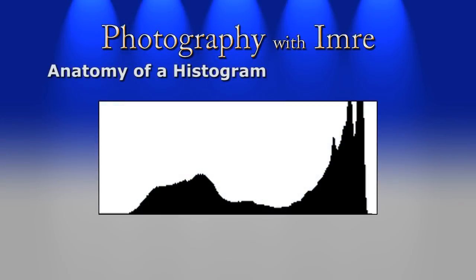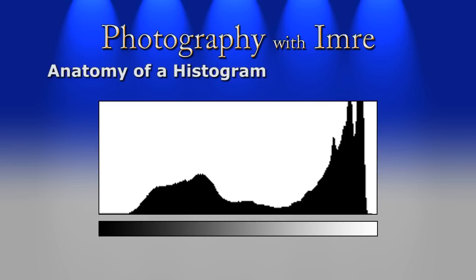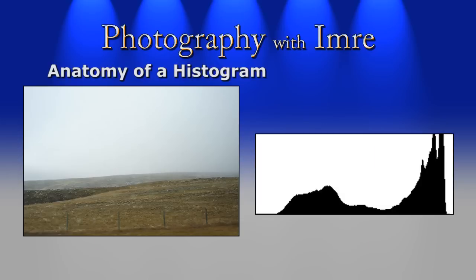A histogram is a type of graph that displays the distribution of brightness levels in an image. The X axis corresponds to the brightness level. Taking a common RGB image with 8 bits per channel, the values on the histogram would go from 0 to 255. The Y axis corresponds to the number of pixels in an image with particular brightness values. Looking at this example photograph and its histogram, you can see how the graph peaks on the right side as this image has a higher concentration of lighter tones.